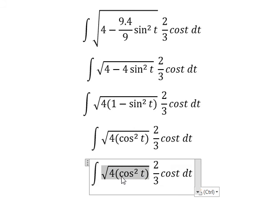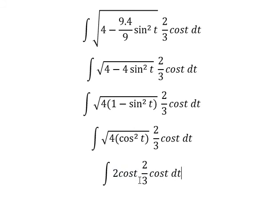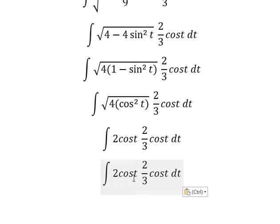The square root of this one, the square root of this one, you get 2 cosine t. Cosine t and cosine t you get cosine t squared. Number 2 with 2 over 3 you get 4 over 3.